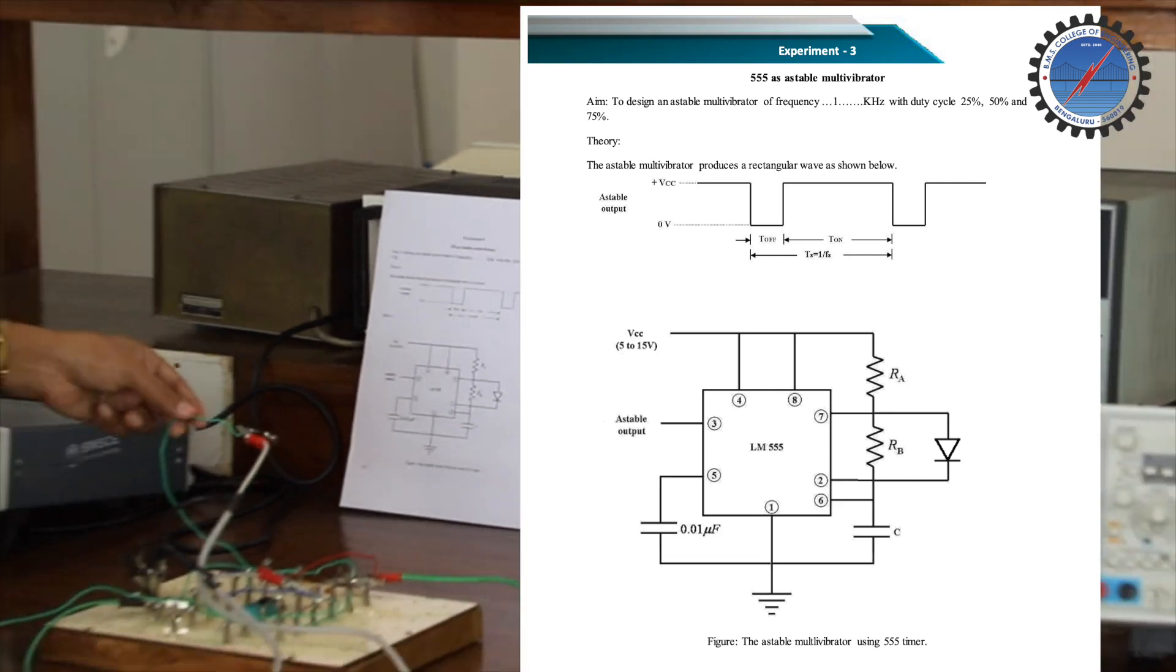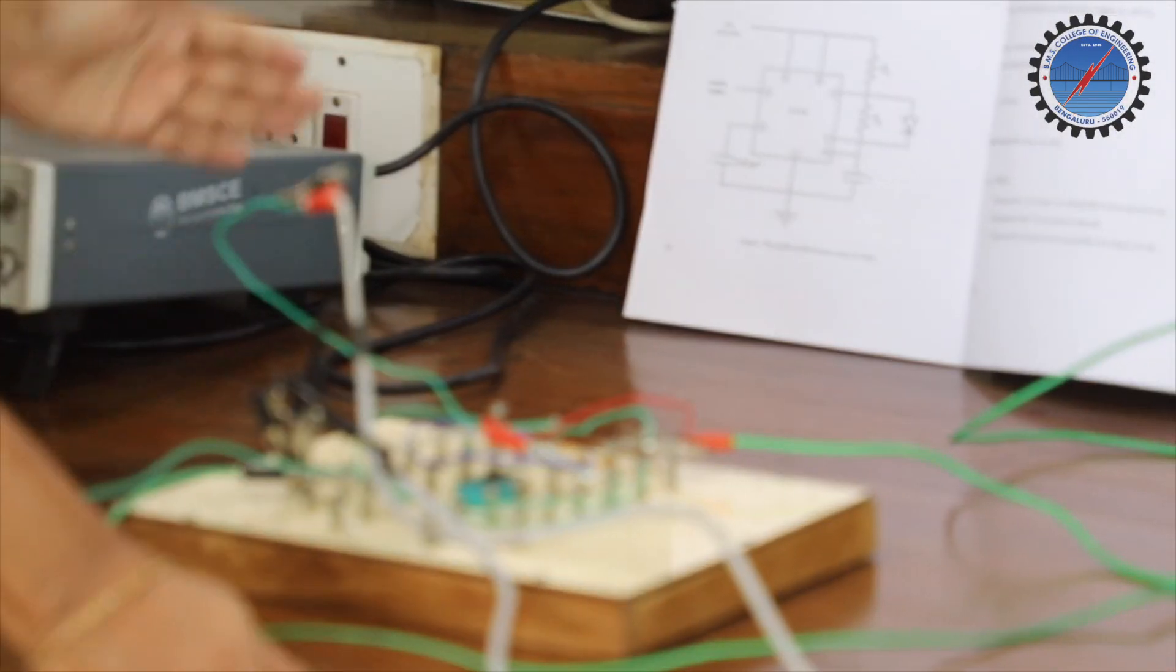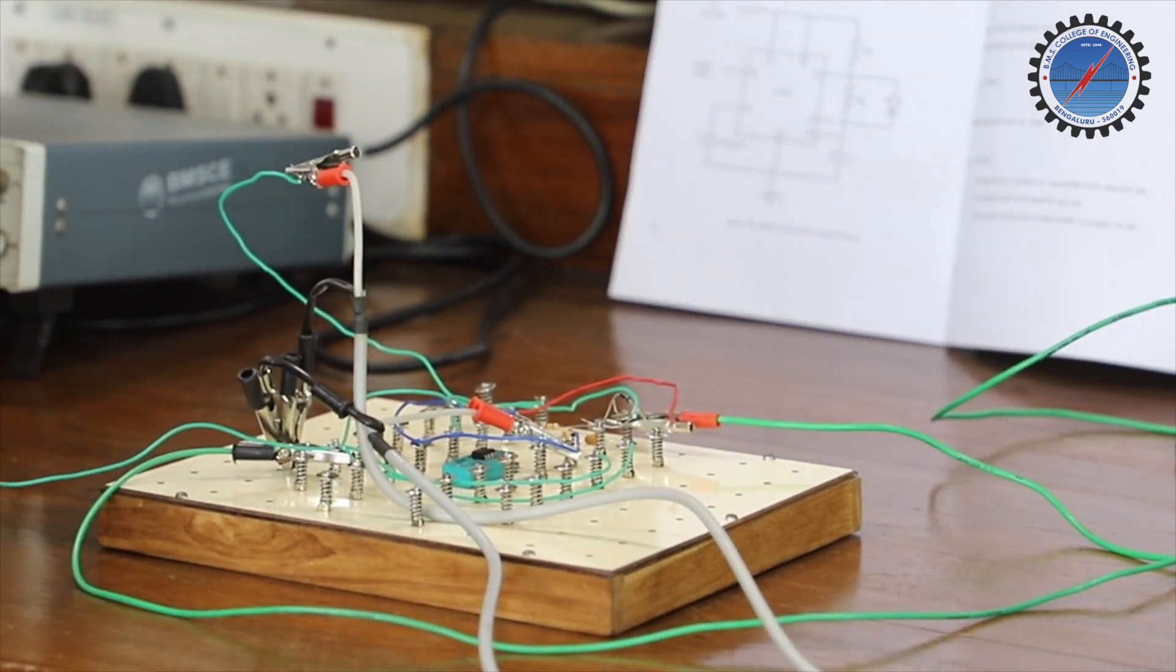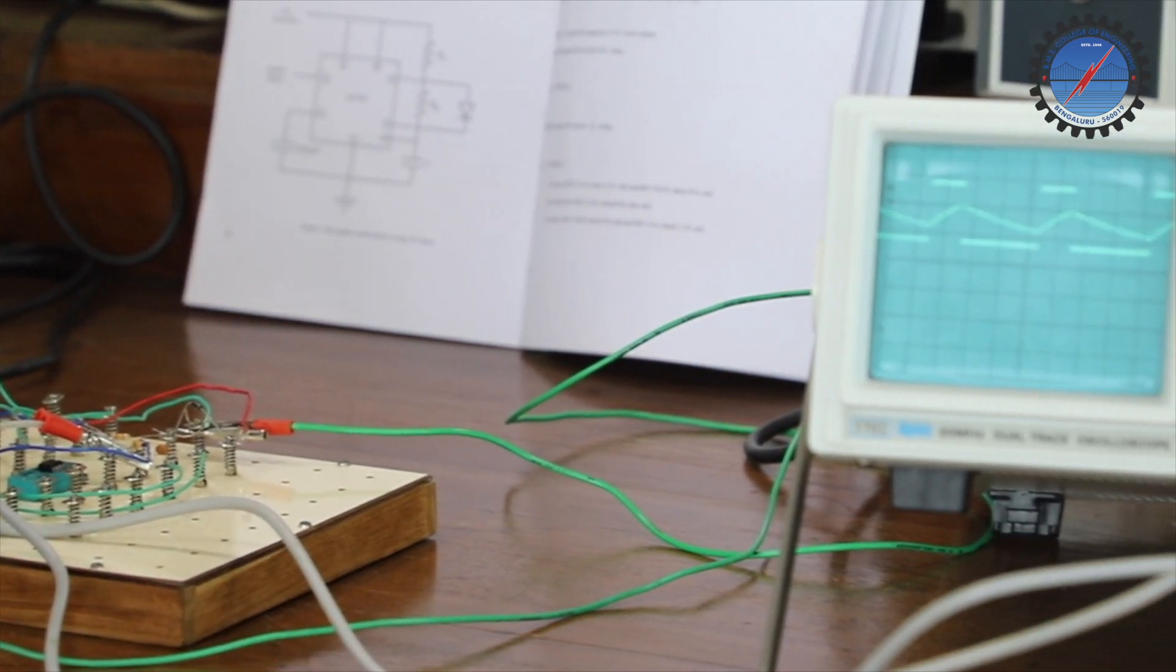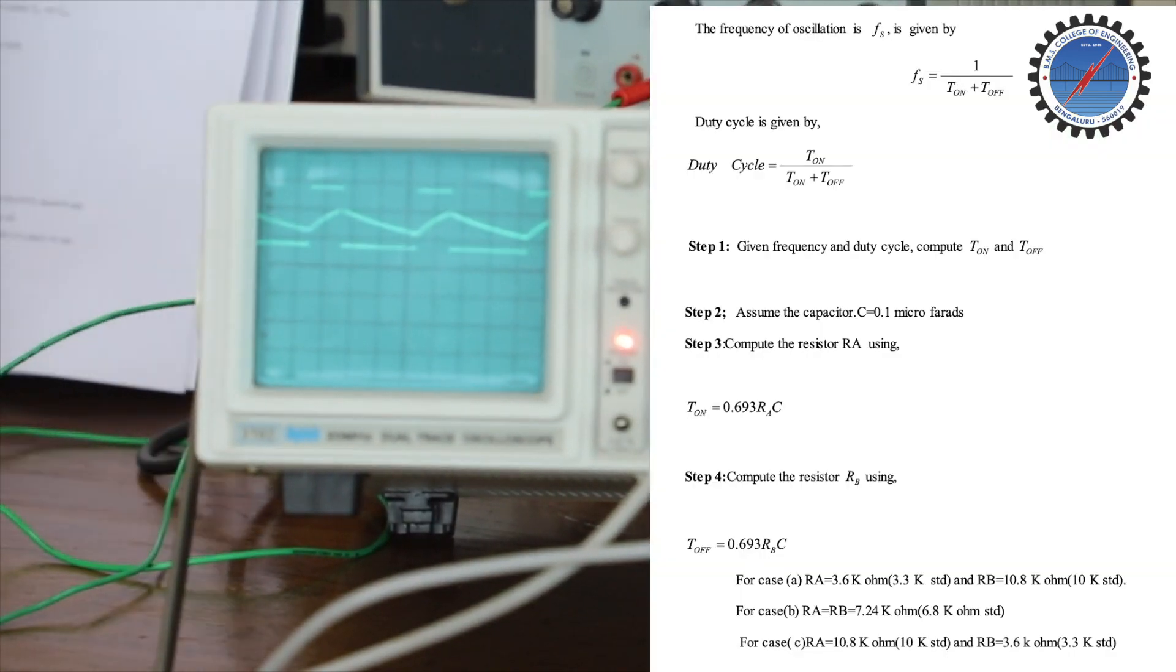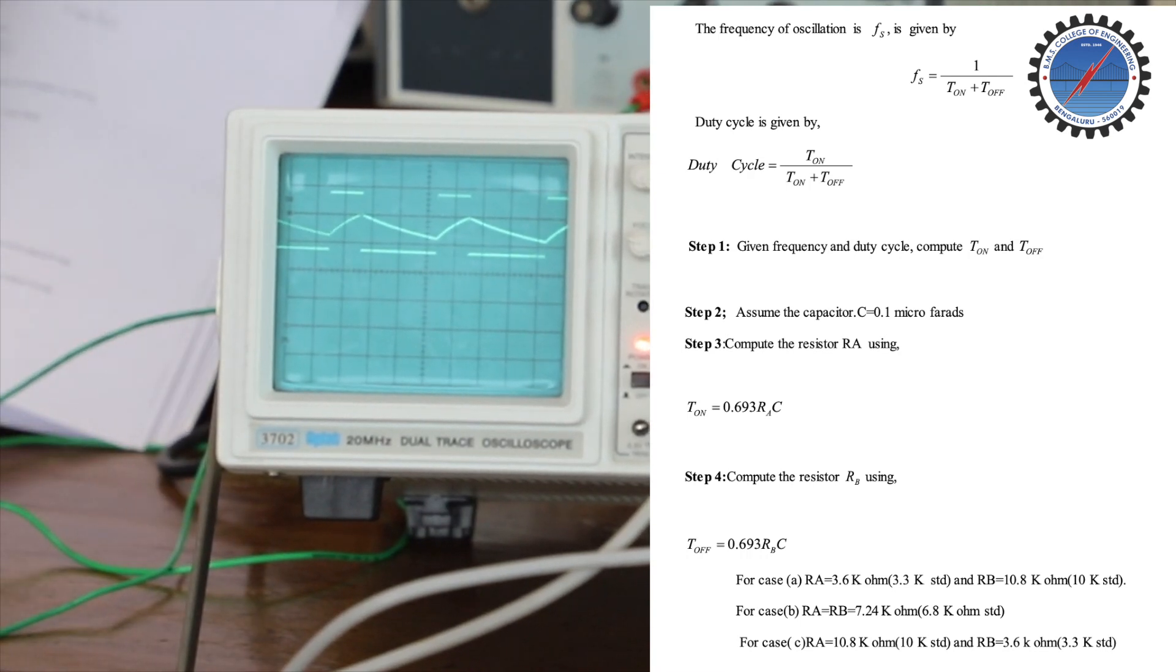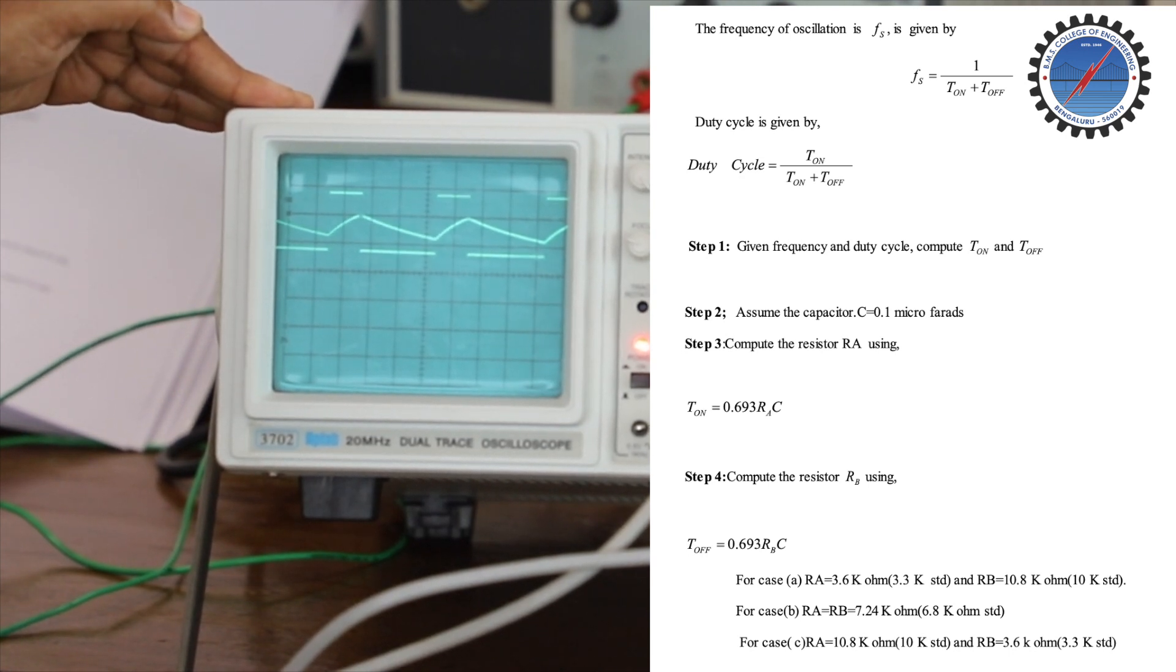This is the circuit rigged up corresponding to the astable multivibrator using 555 timer. Here we are expected to view two different waveforms: one is the charging and discharging values of the capacitor across its terminals, and another is the final output we get, wherein an astable multivibrator does not have any stable state.